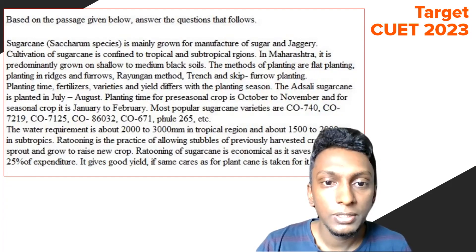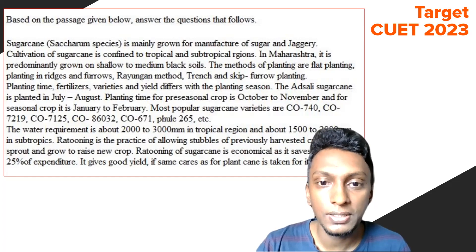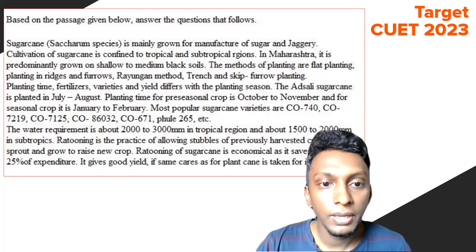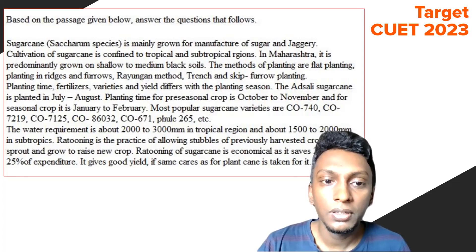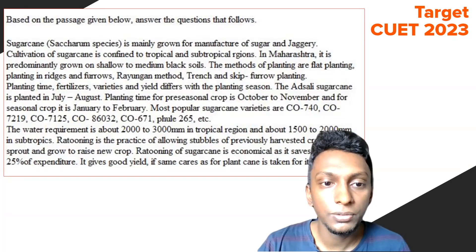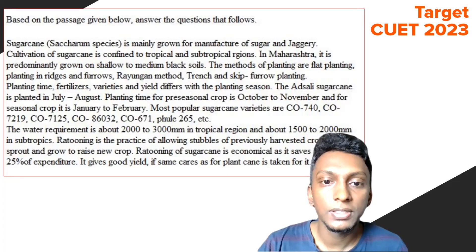Sugarcane (Saccharum species) is mainly grown for the manufacture of sugar and jaggery. Cultivation of sugarcane is confined to tropical and subtropical regions. In Maharashtra, it is predominantly grown in shallow to medium black soils. Methods of planting are flat planting, planting in ridges and furrows, Ryungan method, and trench and skip furrow planting. Planting time, fertilizers, and varieties differ with planting season. The Hatsali sugarcane is planted in July to August. Planting time for pre-season crop is October to November, and for seasonal crop it is January to February. Most popular sugarcane varieties are CO740, CO219, CO7125, CO86032, CO671, and CO265. The water requirement is about 2000 to 3000 mm in tropical regions and about 1500 to 2000 mm in subtropics.